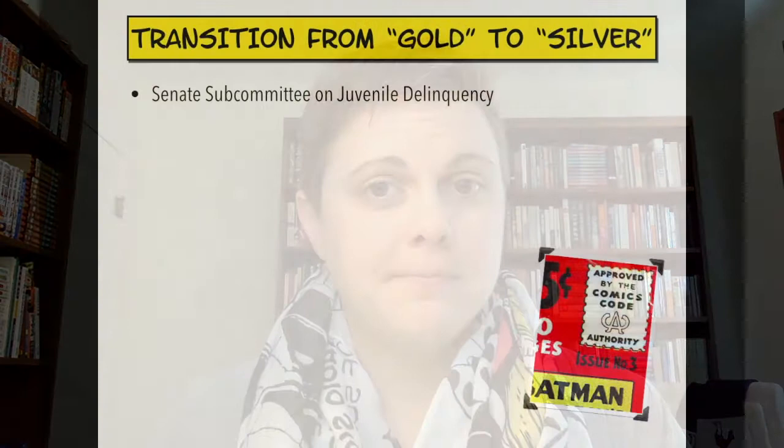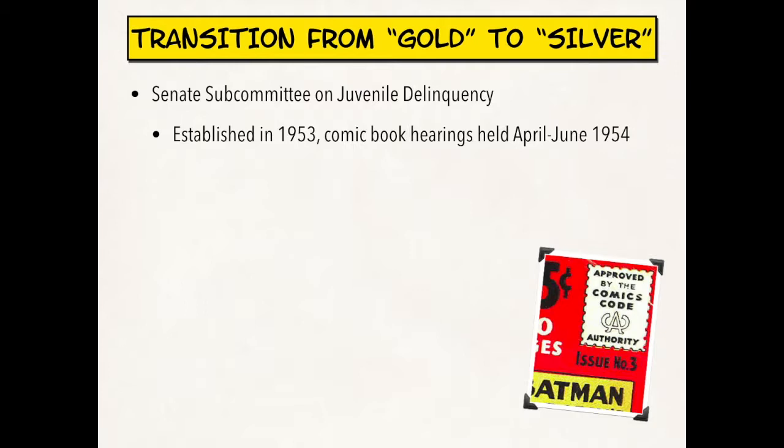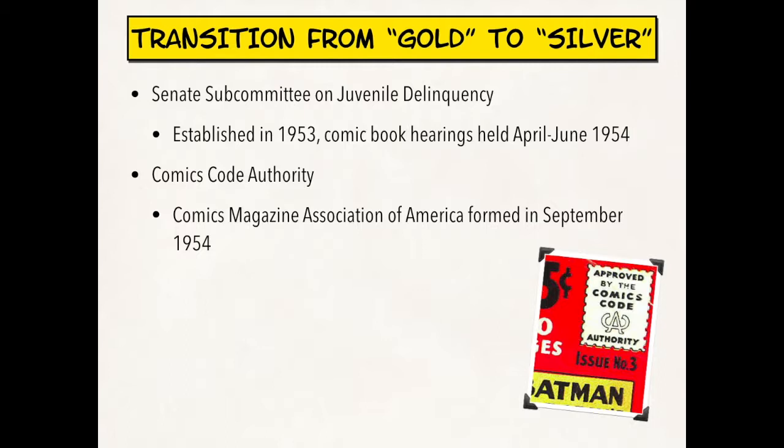The catalyst for the transition from gold to silver age is the Senate Subcommittee on Juvenile Delinquency. It was first established in 1953, but the hearings related to comic books were held from April to June 1954. As a result of these hearings, the Comics Magazine Association of America, which had formed in September 1954, established a Comics Code — a self-censoring editorial policy whose main aim was to improve parental ideas about what was included in comic books. We'll be talking in a lot more detail about Wortham and the Comics Code in a few sessions.